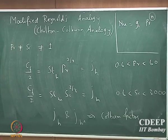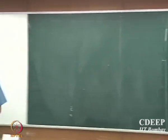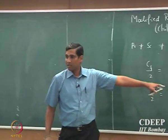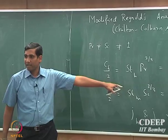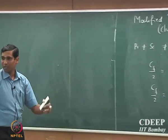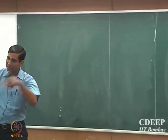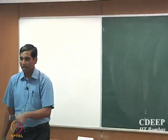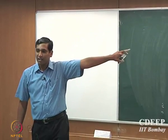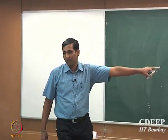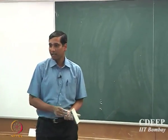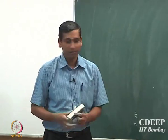In response to a student question: we are going to see the functional form of Nusselt number very soon. You will see that it actually scales as 1/3 — sometimes 0.33 and sometimes 0.4. We are going to see that in the next lecture.